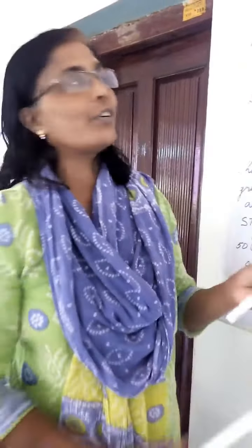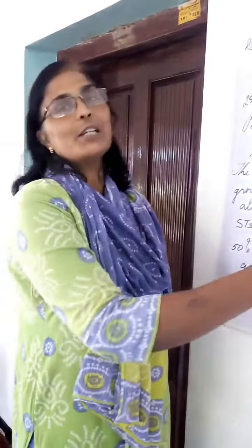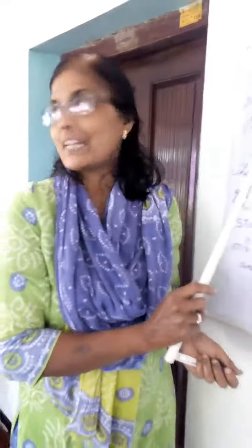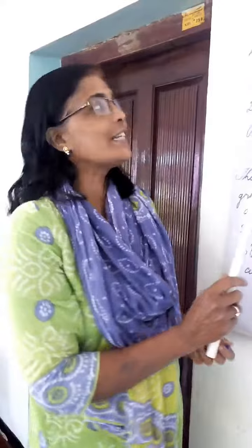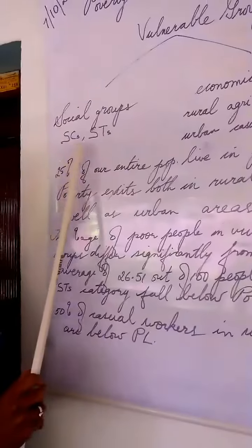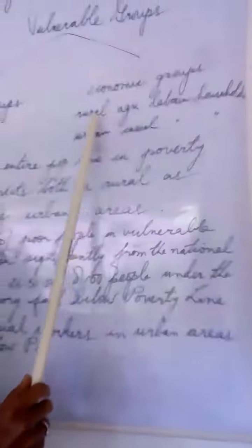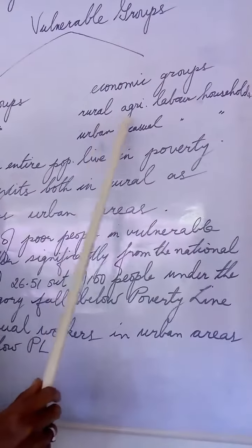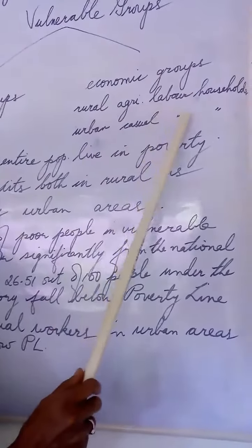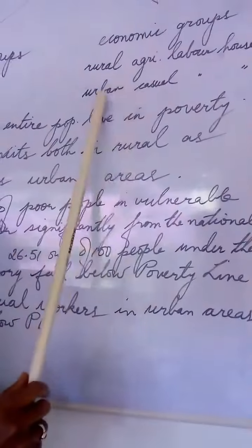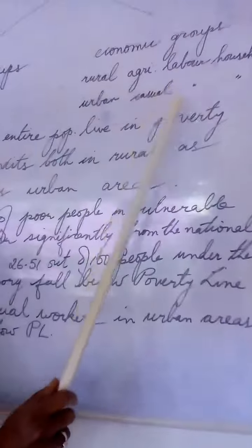Let's do a recap. Vulnerable groups are categorized as social groups and economic groups. Social groups include the Scheduled Caste and Scheduled Tribe, whereas economic groups include rural agricultural labour household and urban casual labour household.